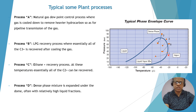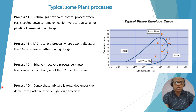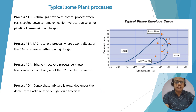Process D is where a dense phase mixture is expanded under the dome, and often it results in relatively high liquid fractions. So at process D you will get high liquid. These are the typical plant processes where the turbo expander is working.